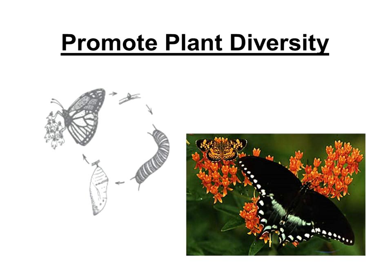Key principle number one when you're trying to attract birds, butterflies, or any other wildlife is to promote plant diversity. We don't want a homogenous plant community with only one or few species. Butterflies are a great example — individual species tend to be host-plant specific, meaning they lay their eggs on only a single or few species of plants. Here is a picture of butterfly milkweed — plants in the genus Asclepias, the milkweeds, are the host plant for monarchs. You can see on the left is the life cycle of a monarch butterfly.